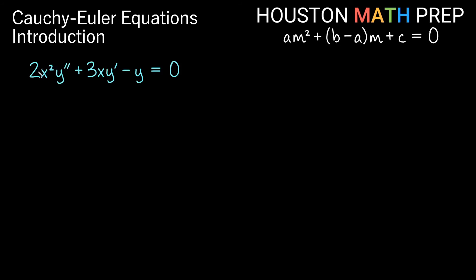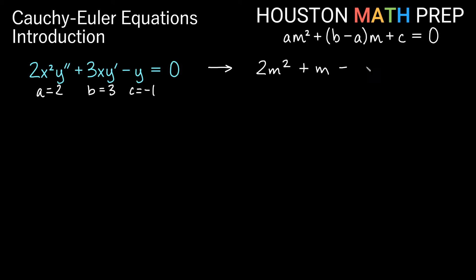Let's look at another example: 2x squared y double prime plus 3xy prime minus y equals zero. Here a equals 2, b equals 3, and c equals negative 1. Building our equation for m: 2m squared plus (b minus a)m plus c. Since b minus a is 3 minus 2 equals 1, we get 2m squared plus m minus 1 equals zero.